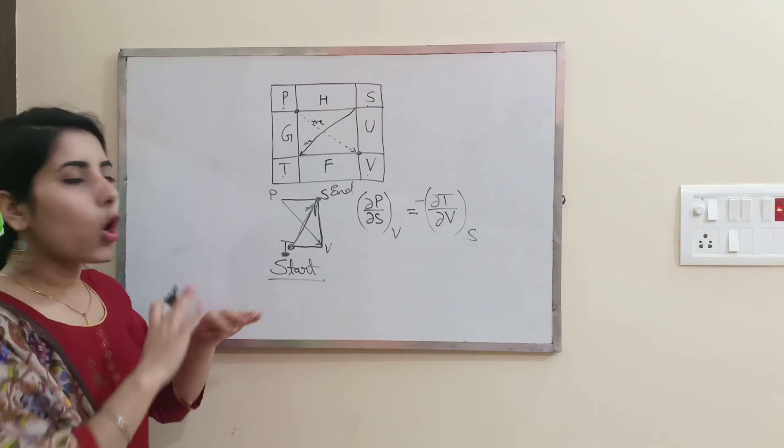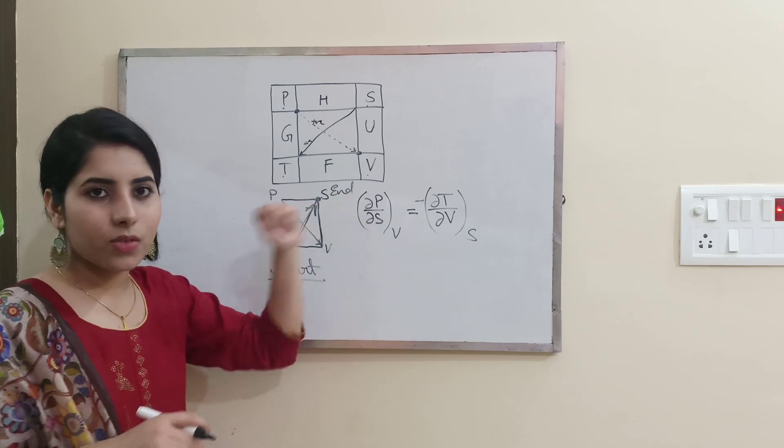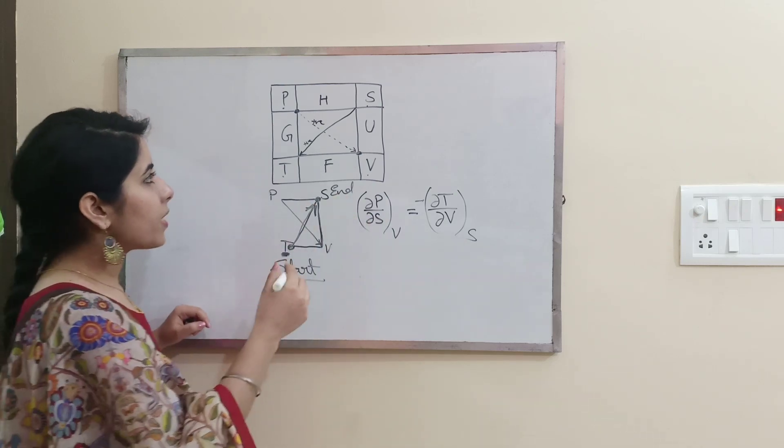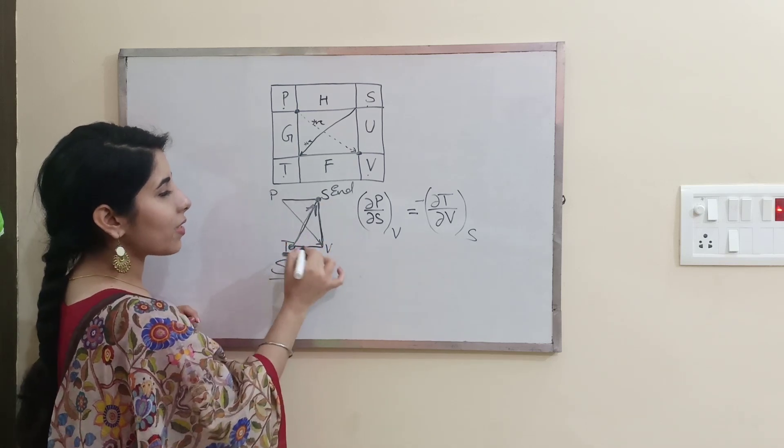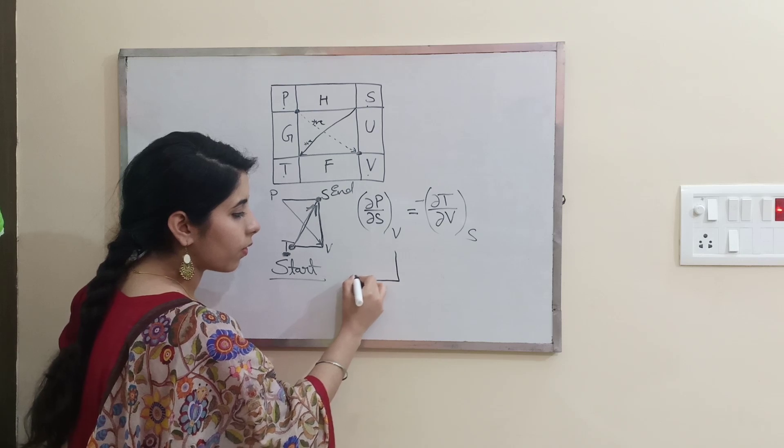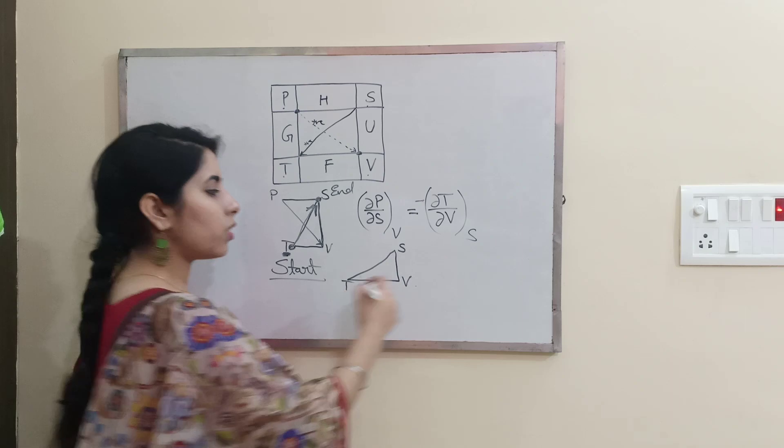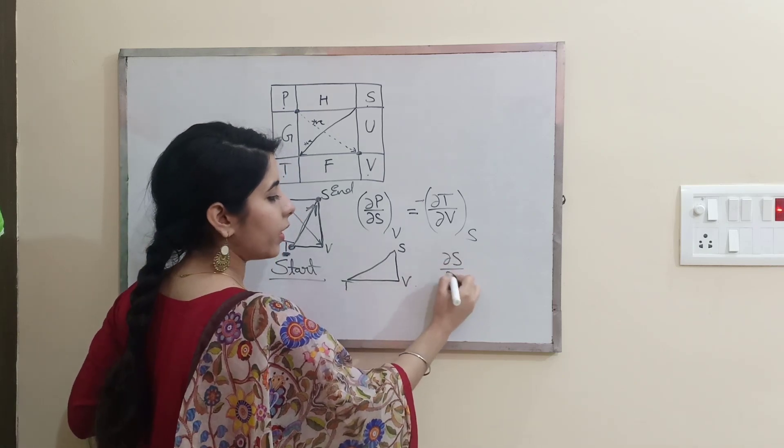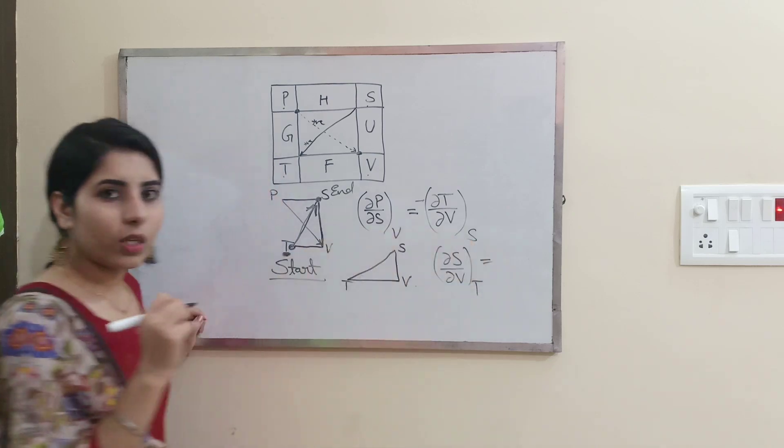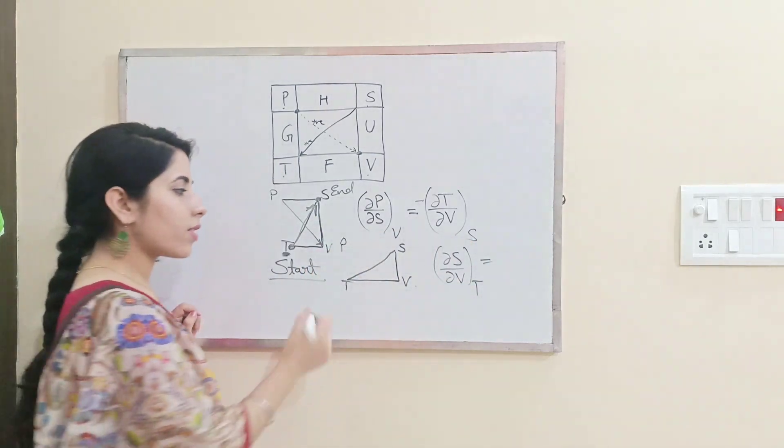That's how you can write all the thermodynamics relations very easily using this trick. Let's do one more and I hope after that you will easily be able to do it. This triangle we have already traced. Let's start with S now: S, V, E. So I will write del S over del V at constant temperature, equal to, now it was here P.